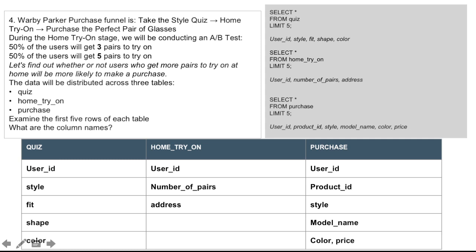And from there we wanted to get to know the different tables a little more, and we really got into the purchase funnel here by selecting five items from different tables. And so we selected from the quiz table, and we found that the items in this table were user ID, style, fit, shape, and color.